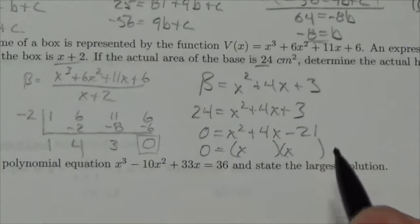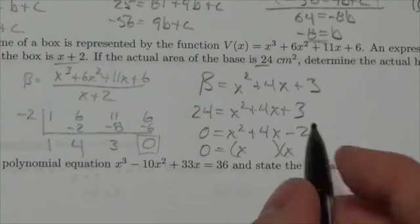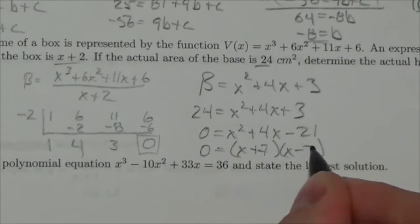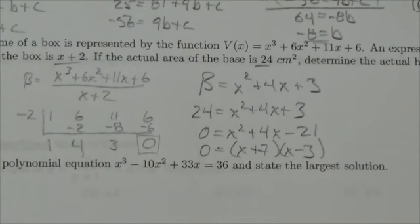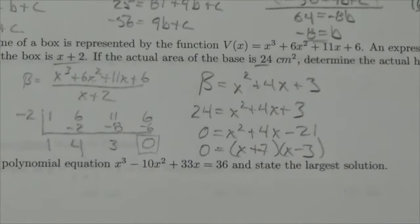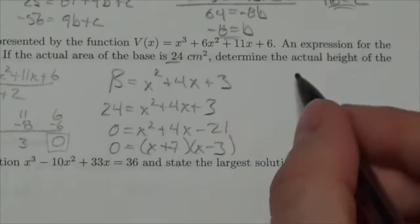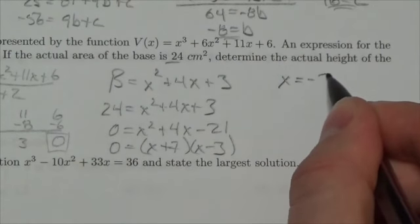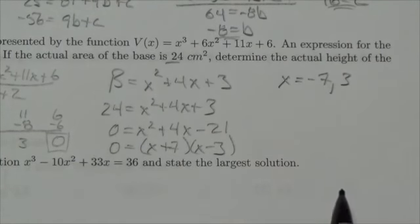And now, thankfully, this works out quite nicely. This is going to be x plus 7 times x minus 3. Could have been a lot worse. Could have required the quadratic formula. But it didn't. And when I get it down to this point right here, just like I was suggesting over here, when I've got these binomials here, I know that my roots are going to be negative 7 and positive 3.